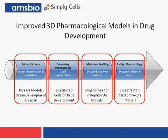Shown here in the diagram are the stages of the drug development pathway. 3D culture models have the potential to improve every stage of the drug development pipeline. Primary screens for target identification and validation are supported through improved disease models of human development and physiology. Specialized cell 3D models are ideally suited for lead optimization or secondary pharmacology. For metabolic profiling, 3D hepatocyte models demonstrate enormous benefits over 2D culture models in terms of their induction of CYP enzymes and their long-term survival in culture. Finally, 3D cardiomyocyte models are used to look for potential drug side effects in the heart.